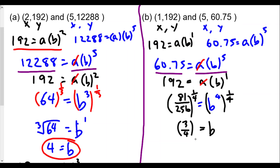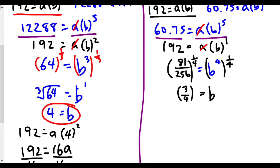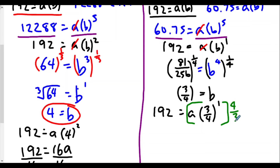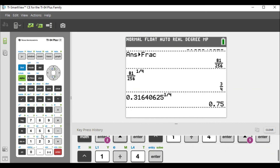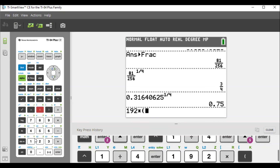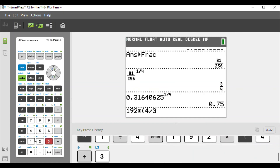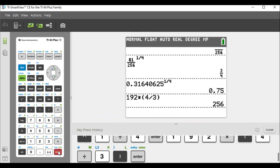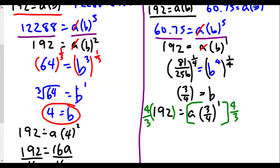Now we use the equation 192 equals a times three-fourths to the first power, which is just three-fourths. To solve for a, we multiply both sides by the reciprocal of three-fourths, which is four-thirds. On the calculator: 192 times four over three gives us 256. So a equals 256.